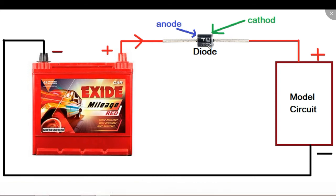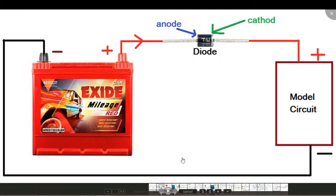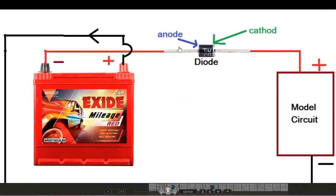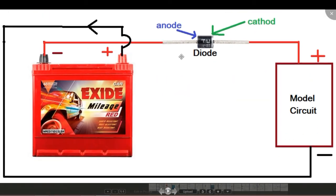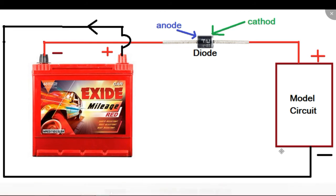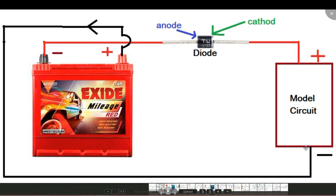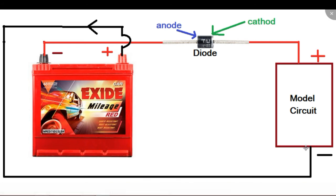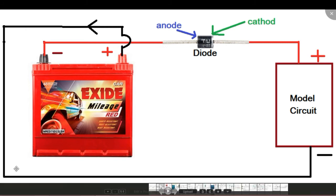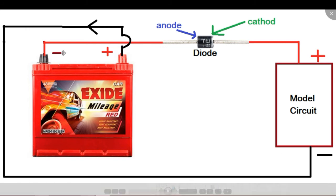Now what happens if you make the same mistake in this case? That means we are connecting the negative terminal of the battery to the positive terminal of our circuit and the positive terminal of the battery to the negative terminal of our circuit. In this case the current will try to flow from the positive terminal of the battery to the negative terminal through our circuit.